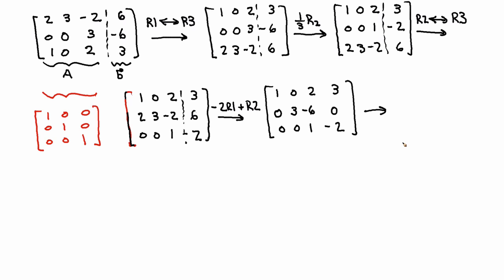Now, it looks like if I multiply the second equation by 1 third, I get my ones on the diagonal. So, I'm going to say 1 third row 2. 0, 1, minus 2, 0. 0, 0, 1, minus 2.